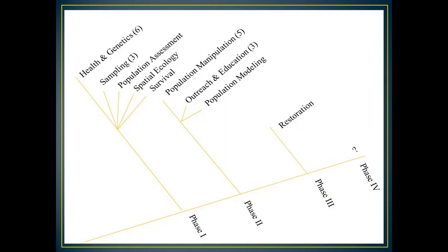This is me going back and saying: what do we know about the life history traits of Hellbenders, at least in Indiana? And once we obtain that information, how can we start manipulating the population and hopefully start restoring the population and re-establish it so that it's removed off the endangered species list? These are the three phases I've been working on over the past 13 years, and I'm going to come back to phase four at the very end of the presentation.